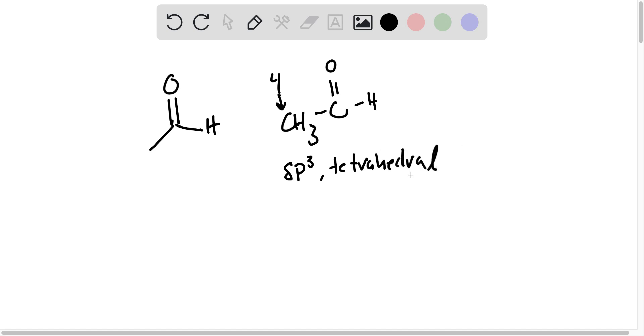So that should tell us the hybridization. What about the bond angles? If it's tetrahedral, then we're looking at 109.5 degrees. That just comes out of the fact that it's tetrahedral.